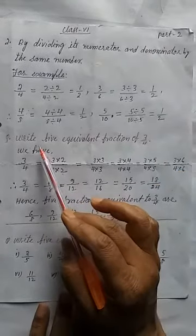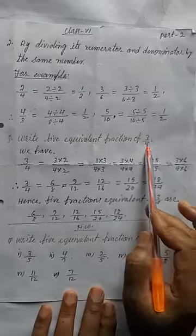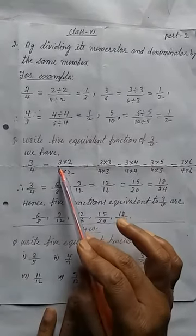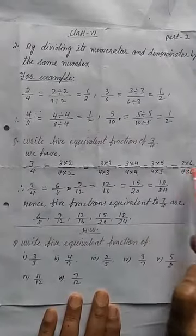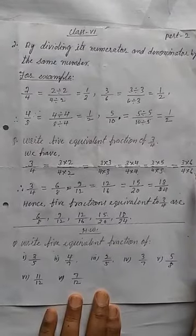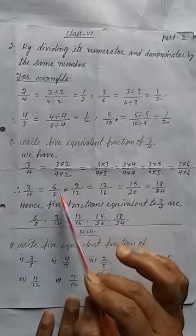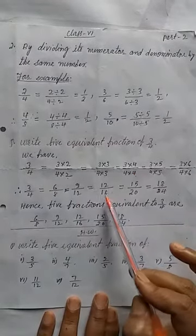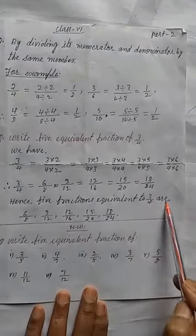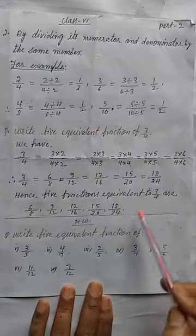Now I am explaining one question on the basis of this. Write 5 equivalent fractions of 3/4. So many questions in the exercise will be done on this basis. The question is 3/4, and we need 5 fractions, so we multiply by 2, 3, 4, 5, and 6. Multiplying 3/4 by 2/2 gives 6/8; by 3/3 gives 9/12; by 4/4 gives 12/16; by 5/5 gives 15/20; by 6/6 gives 18/24. Hence, the 5 equivalent fractions of 3/4 are: 6/8, 9/12, 12/16, 15/20, and 18/24.